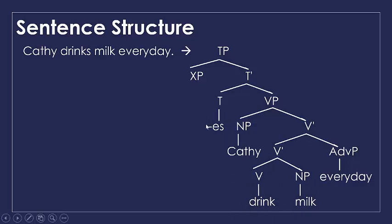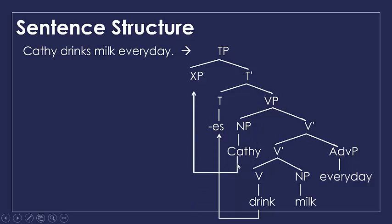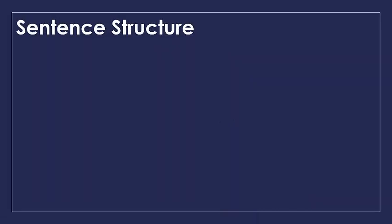Here -ES is defective — it is an inflection and therefore cannot stand by itself. It takes or absorbs 'drink,' which moves to this position and merges into 'drinks.' If you have the subject Kathy as the specifier of VP, 'drink' moves to -ES. Then Kathy moves to the specifier of T because of the requirement that every sentence in English should have a subject.